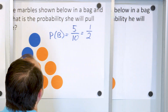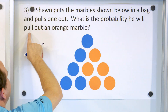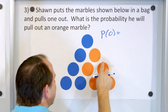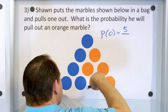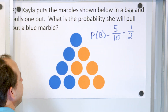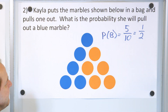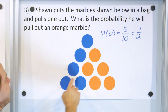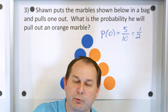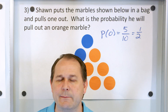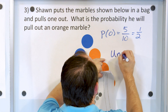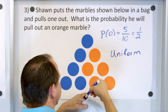Now, what is the probability of pulling out an orange marble? There are also five orange marbles out of a total of ten, which again works out to one half. So the probability of pulling a blue marble is one half, and the probability of pulling an orange marble is also one half. Both possible outcomes have exactly the same probability, so this is also a Uniform Probability Model.